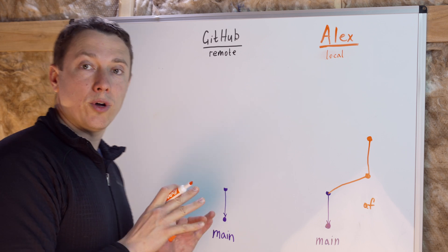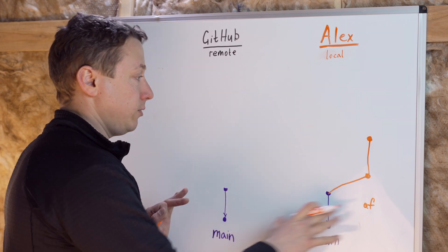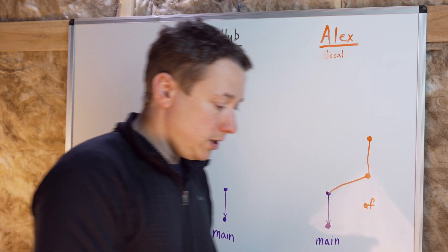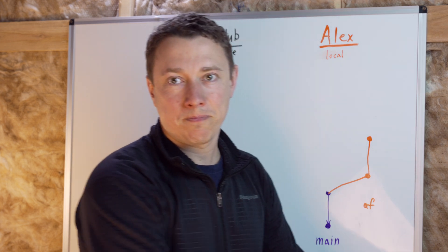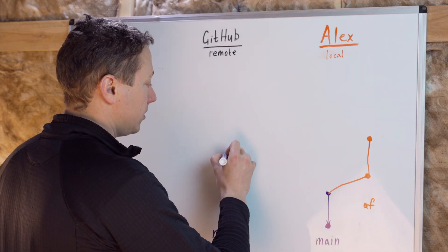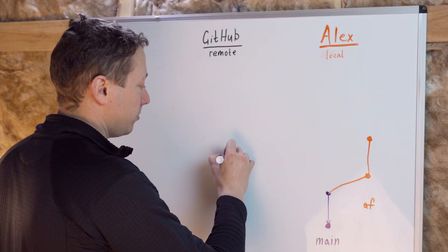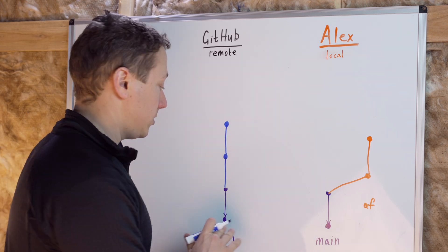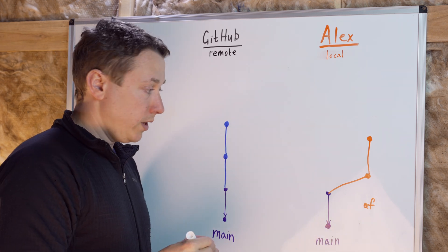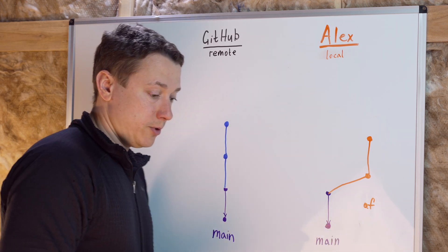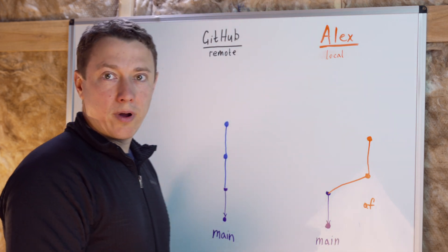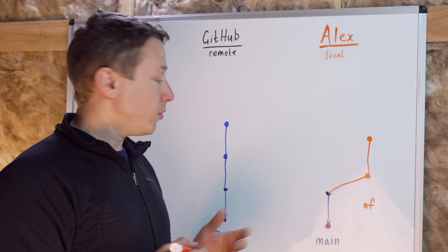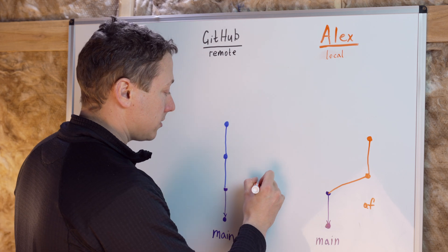At that point you have a feature completely done, but while you're working on the feature, your team progressed and merged additional commits into main. Let's say there are two additional commits into main since when you cloned. When you push your feature branch to the remote to eventually create a pull request for the team,